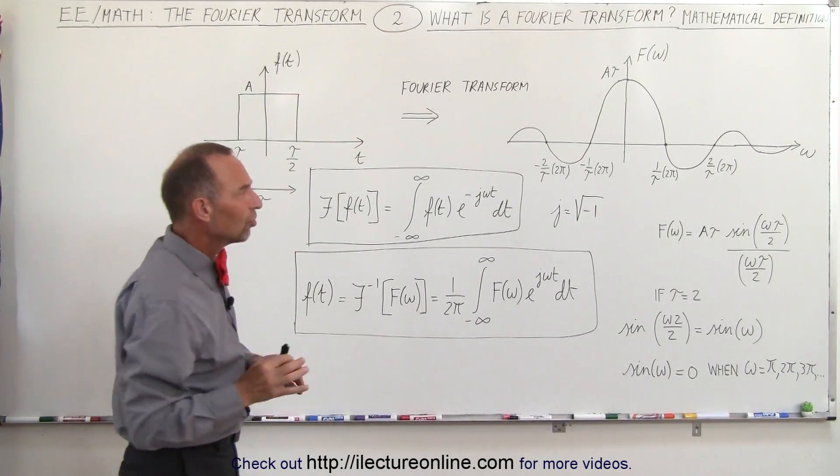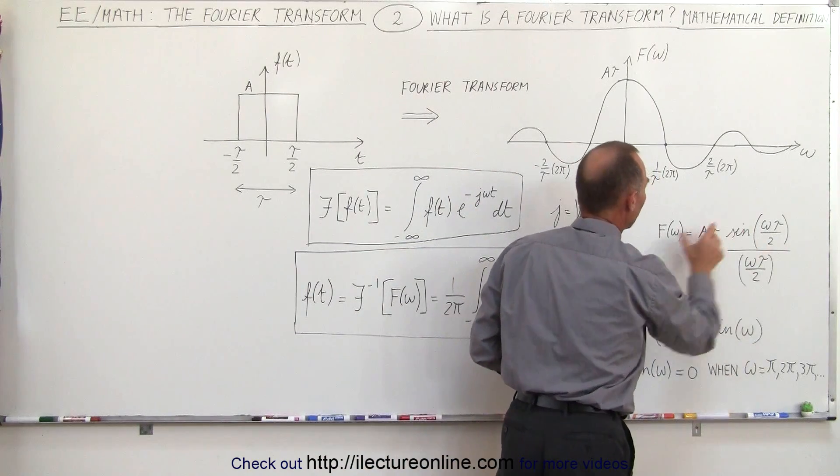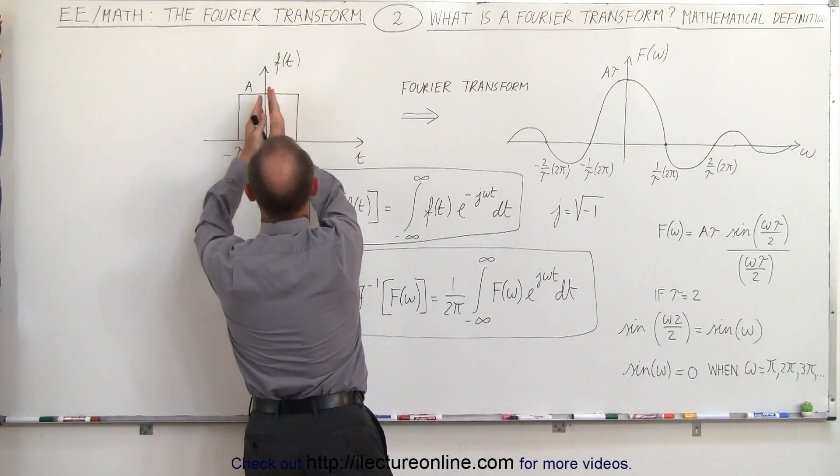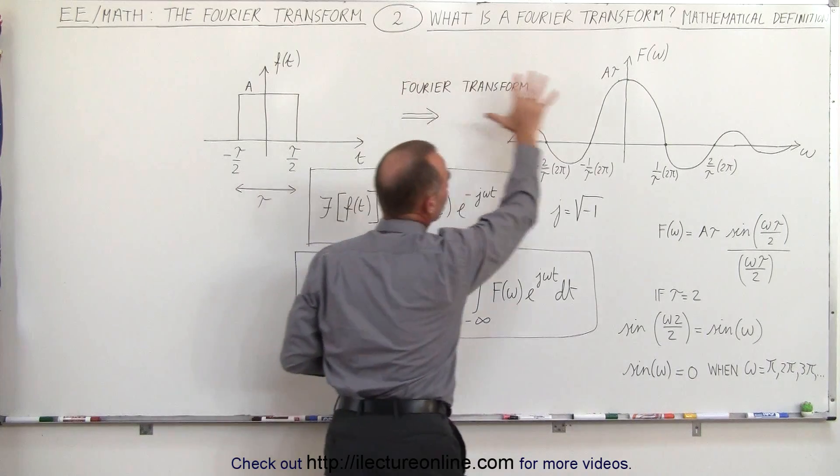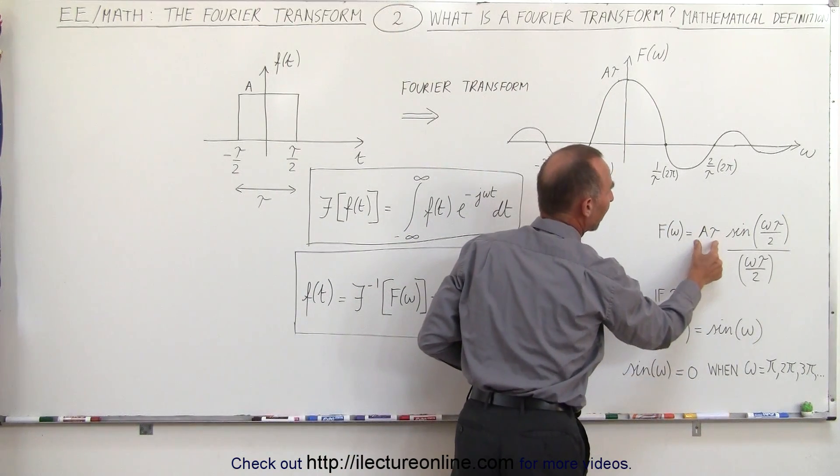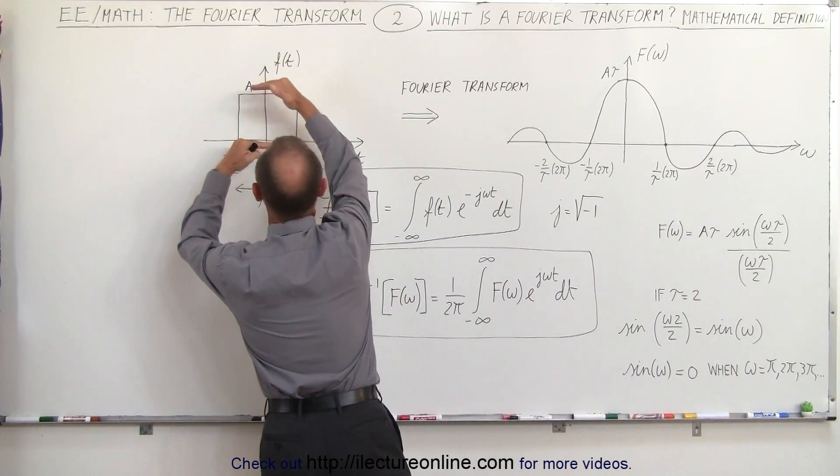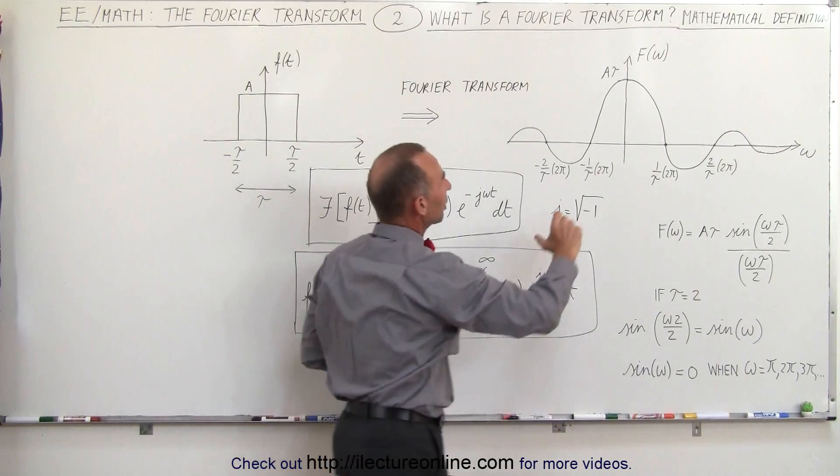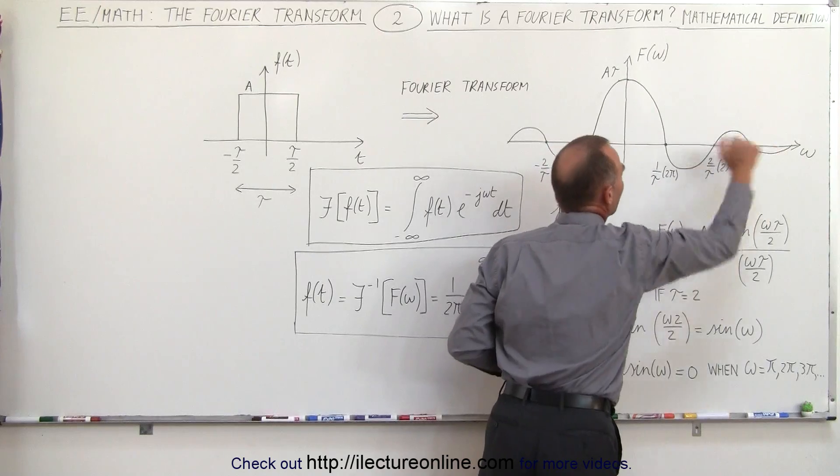Now to understand this a little bit more here's the actual equation that describes the Fourier transform of a single pulse that is centered about the central axis here the vertical axis. If we do a Fourier transform of that we get a function which is equal to the amplitude a times tau. Notice a is the amplitude of the time function right here. We multiply it times the pulse width that becomes the amplitude at the center here of the frequency function.